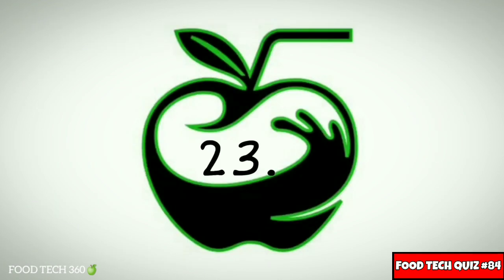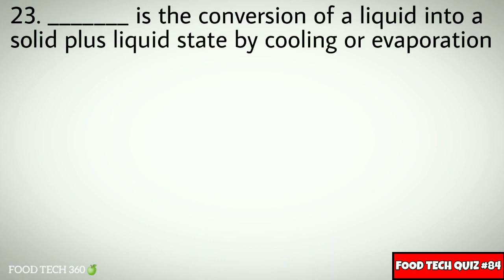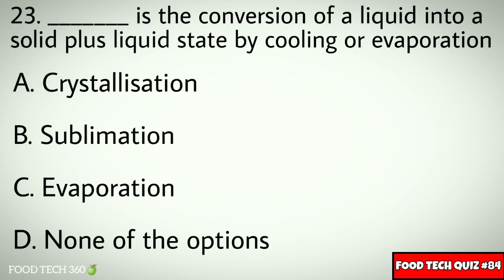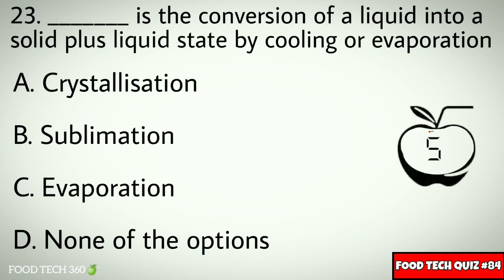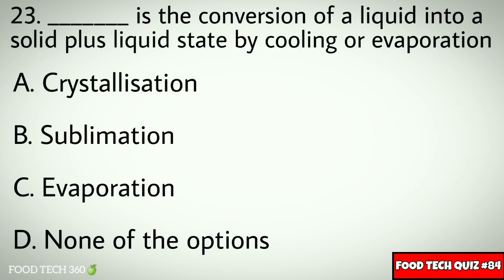Question number 23: Dash is the conversion of a liquid into a solid plus liquid state by cooling or evaporation. Options: A. Crystallization, B. Sublimation, C. Evaporation, D. None of the options. Correct answer: A. Crystallization.